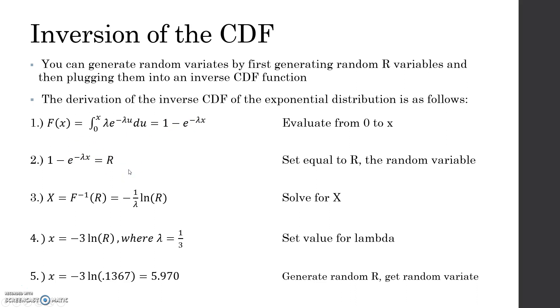Then you take that and set it equal to R, which is going to be your random variables. Then you solve this equation for X. So you get the inverse of the random variables is negative 1 over lambda, the natural log of R, once you solve for R.